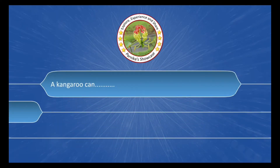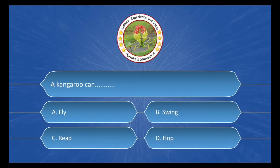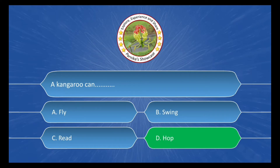Next question is: a kangaroo can ___, and the options are: A. Fly, B. Swing, C. Read, D. Hop. And the correct answer is option D. Hop.